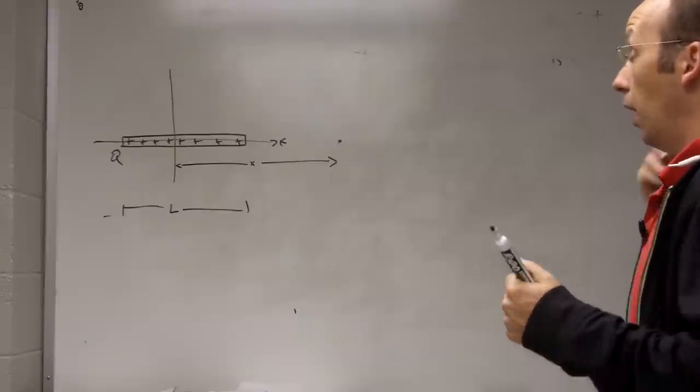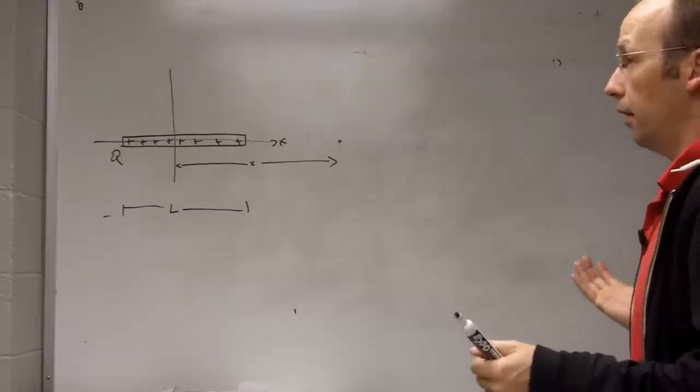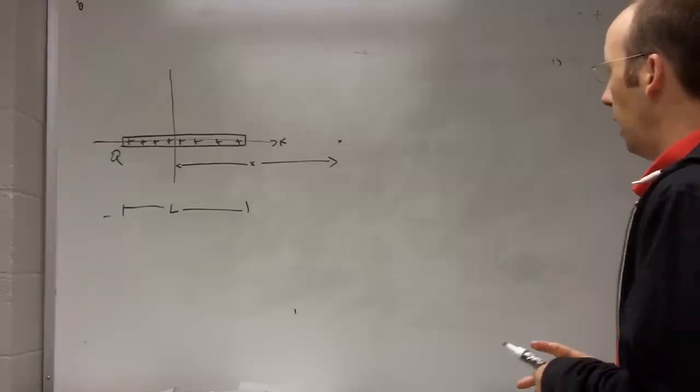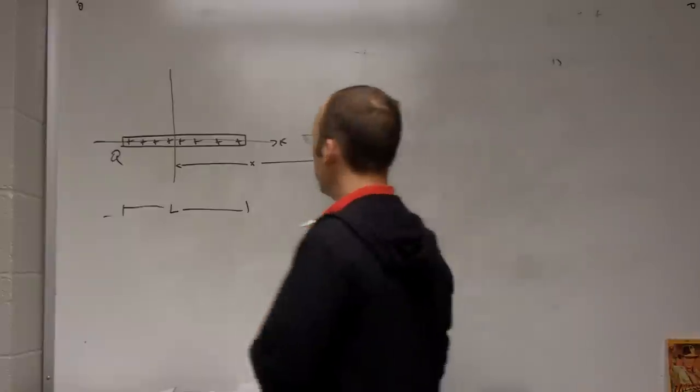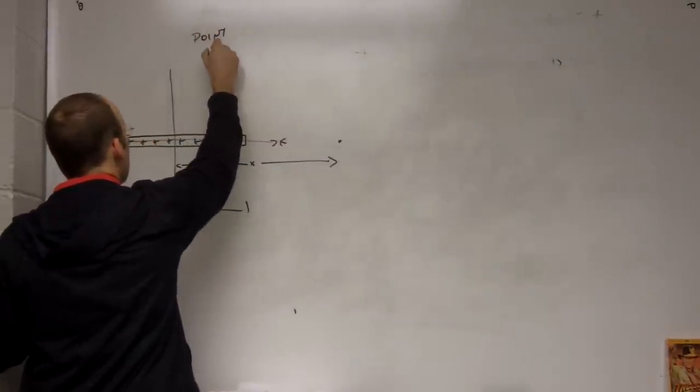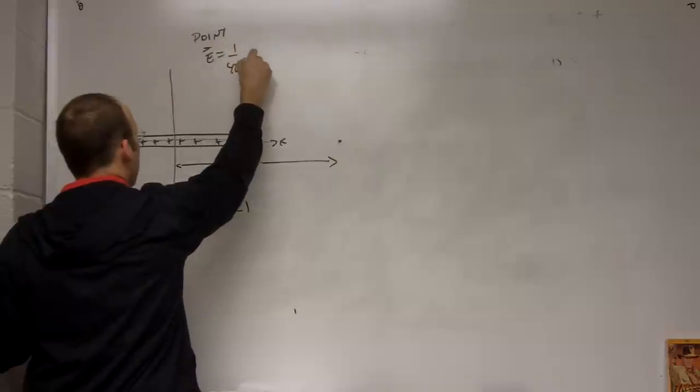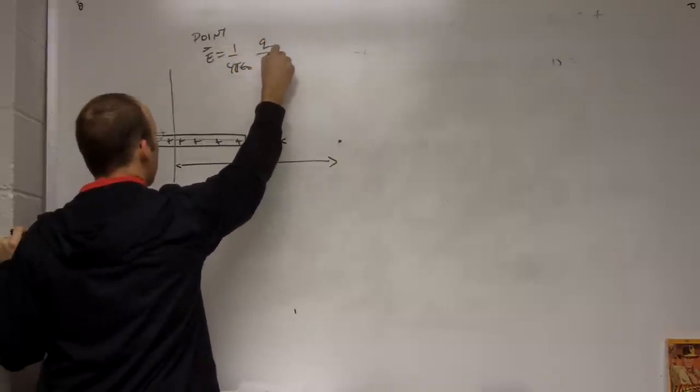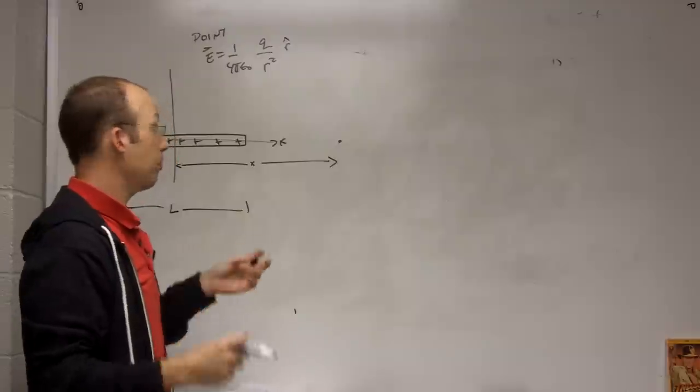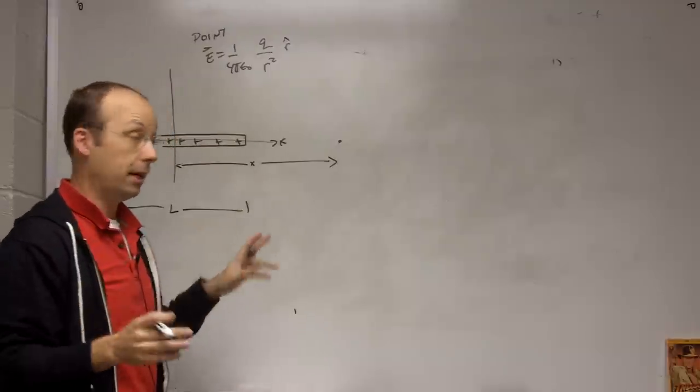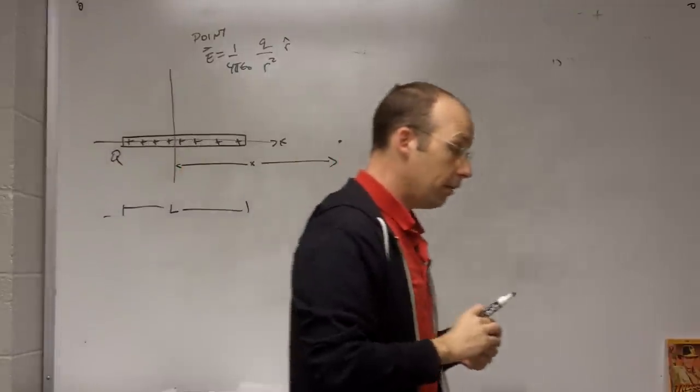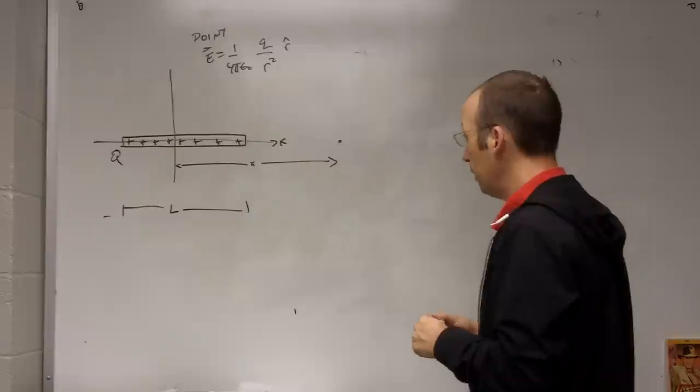Okay, so how do we do this problem? Well, I mean, there's no formula for the electric field due to a line charge. Well, there is, but we don't want to start with that. So all we really know is the electric field due to a point charge. So I know that if I have a point, E equals 1 over 4 pi epsilon naught Q over R squared R hat.